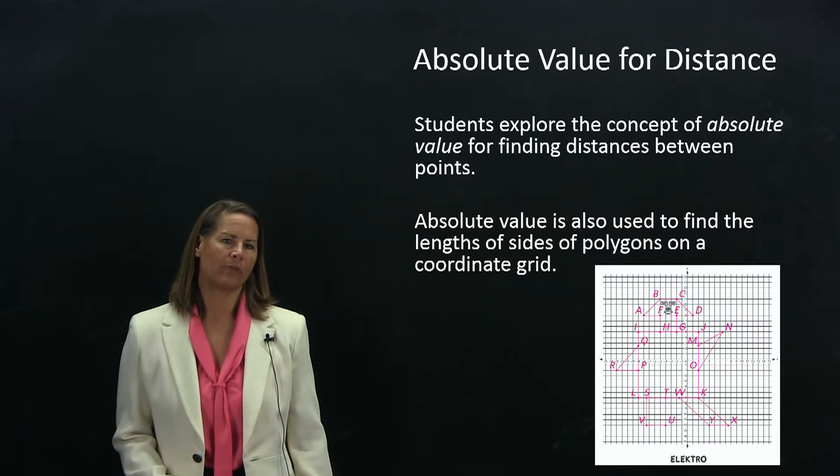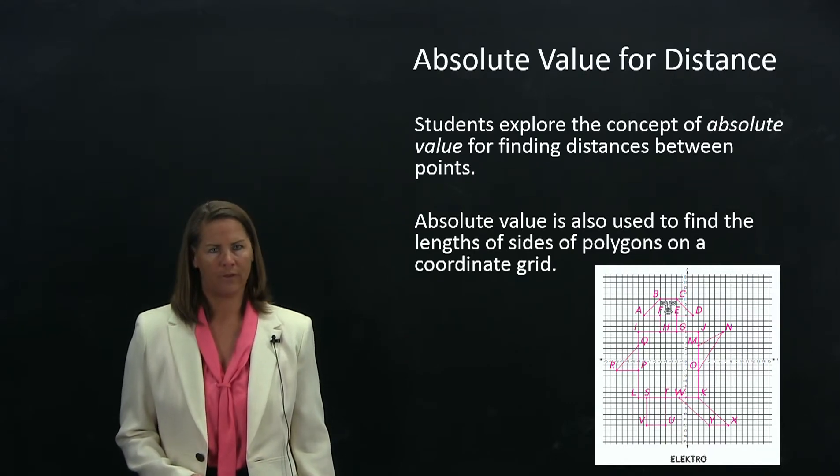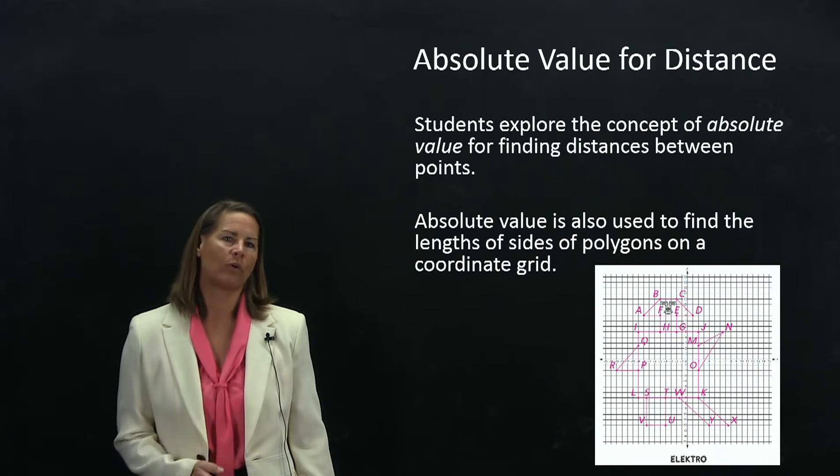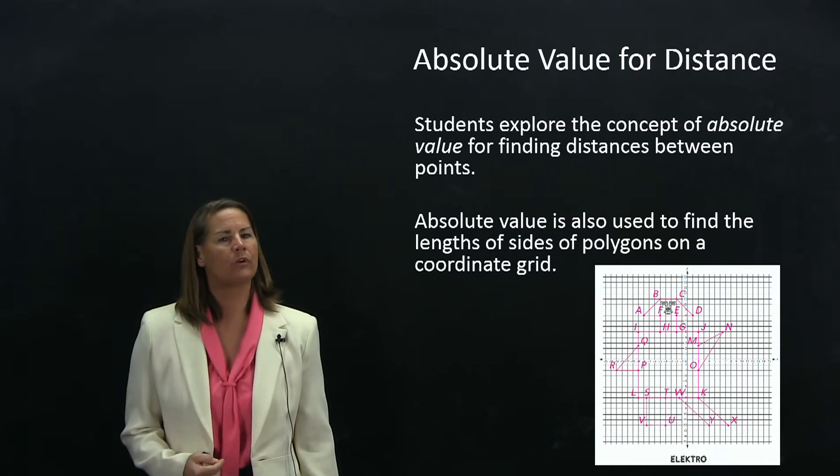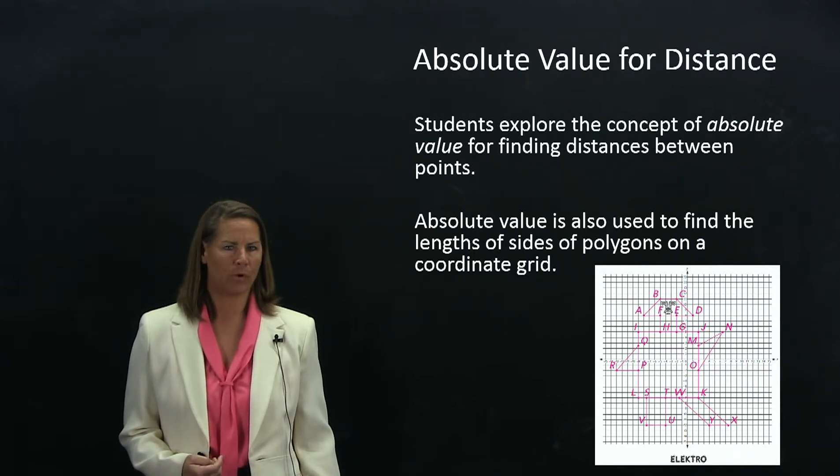Students will apply this when they're thinking about, for example, the length of line segments on a coordinate grid. If you have vertically or horizontally positioned points, you can find the distance between them by thinking about the distance from the axis of each of the points.